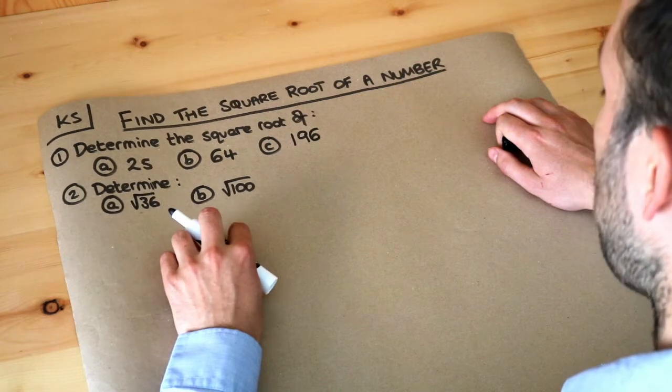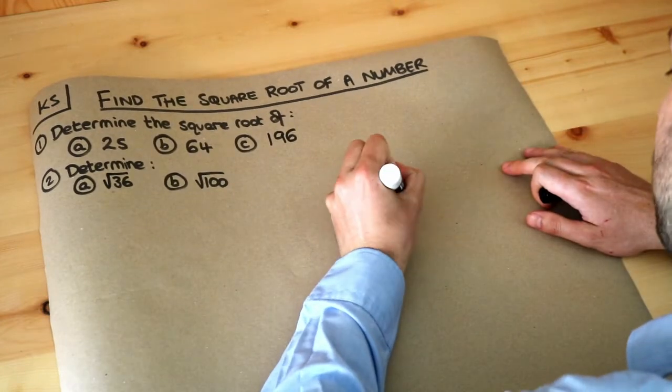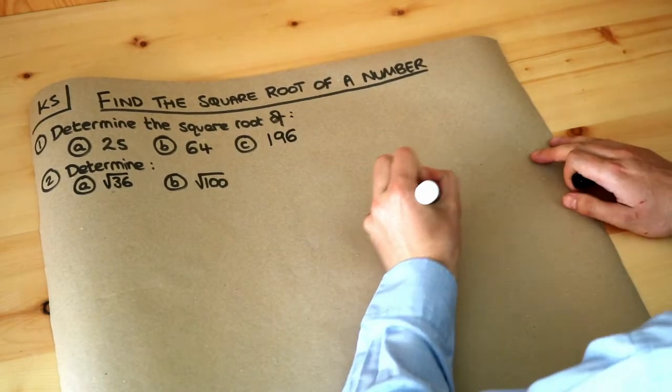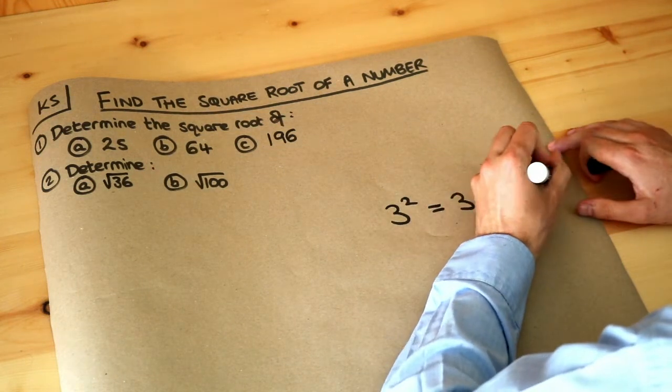Now in a previous video we looked at what the square of a number is. So if for example we wrote 3 squared, that means 3 times by itself and that would be equal to 9.